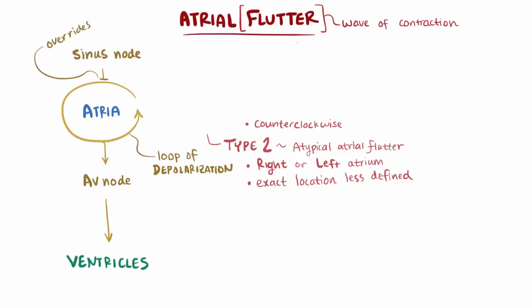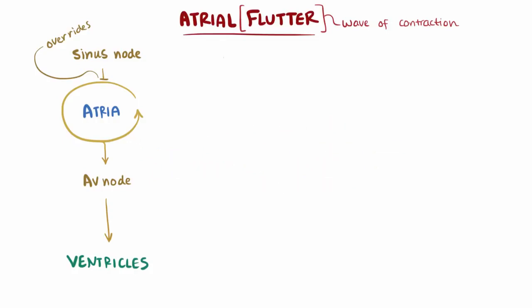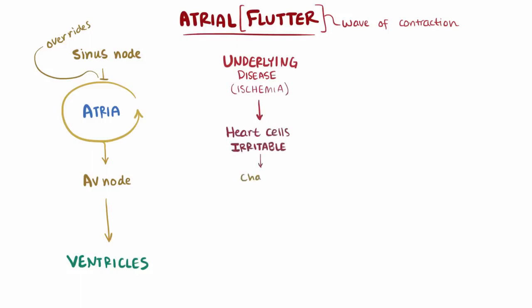Since everyone has a cavo-tricuspid isthmus but not everyone has atrial flutter, there must be something else at play that causes a re-entrant circuit. In most cases there's some underlying disease, like ischemia, that makes the heart cells more irritable, which can change some of their properties, like the refractory period, making it more likely that re-entrant circuits develop.